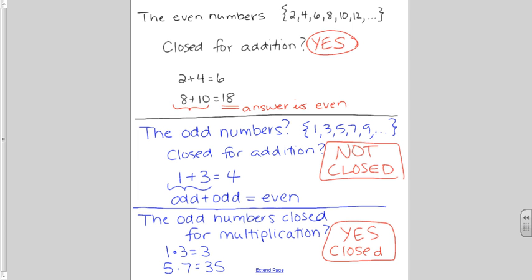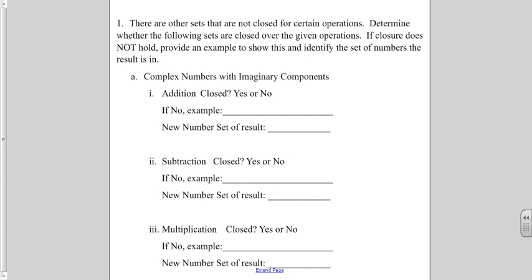If we think about it, whenever we multiply two odd numbers together, all the factors are going to be odd. So, we're going to wind up with another odd number. So, we looked at evens and odds, but there are other sets that are not closed for certain operations.